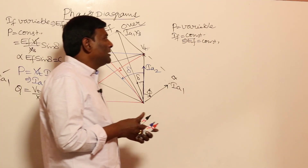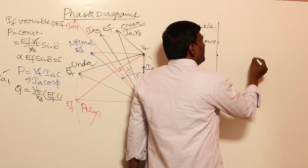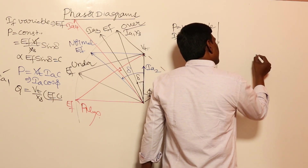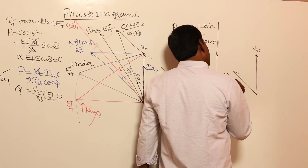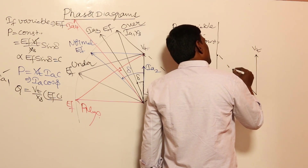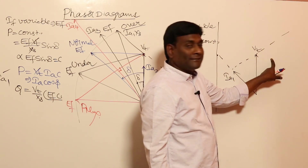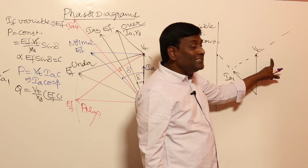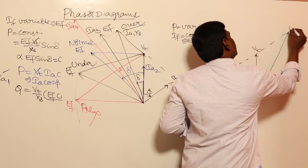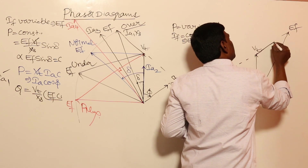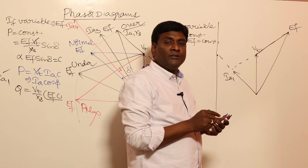For a motor, consider Vt fixed and Ia1 leading. Drawing 90 degrees to Ia1 going through Vt gives the Ia·Xs phasor. EF should be drawn on the right side because EF must lag behind Vt in a motor. So EF is placed here, and Ia·Xs is positioned accordingly. Don't worry about whether it's Vt minus Ia·Xs or Vt plus Ia·Xs — the equations take care of that.